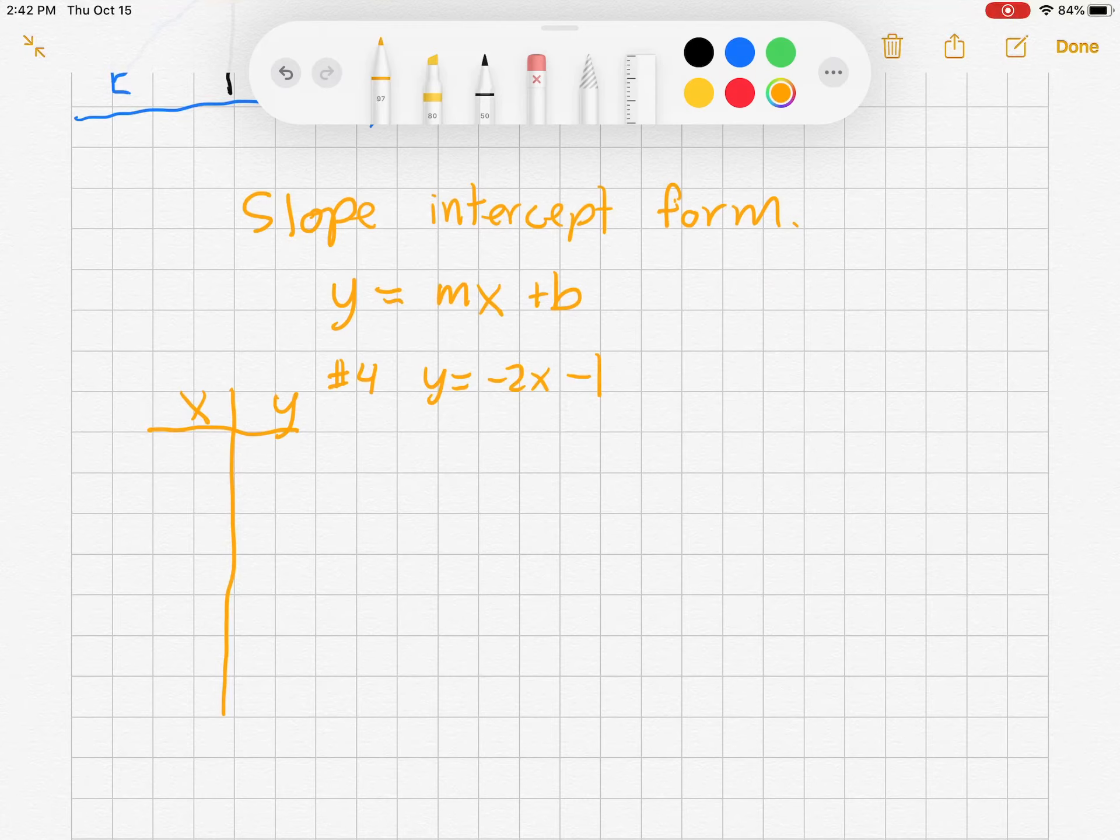So we can pick whatever numbers you want. I like to keep mine close to zero and whole numbers because it's just easier. So let's try negative 1, 0, 1, 2. You can pick other numbers if you want. These are just the ones I chose. So let's plug them in.